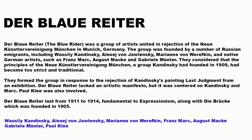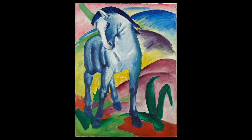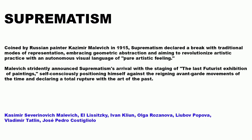The Blue Rider — Der Blaue Reiter — was a group of artists united in rejection of the Neue Künstlervereinigung München in Munich, Germany. The group was founded by Russian immigrants including Vasily Kandinsky and native German artists such as Franz Marc, August Macke, and Gabriele Münter, who felt the principles of Kandinsky's earlier group had become too strict and traditional. They formed a group in response to the rejection of Kandinsky's painting Last Judgment from an exhibition. Their Blaue Reiter lasted from 1911 to 1914, fundamental to Expressionism, along with Die Brücke. Paul Klee was also involved.